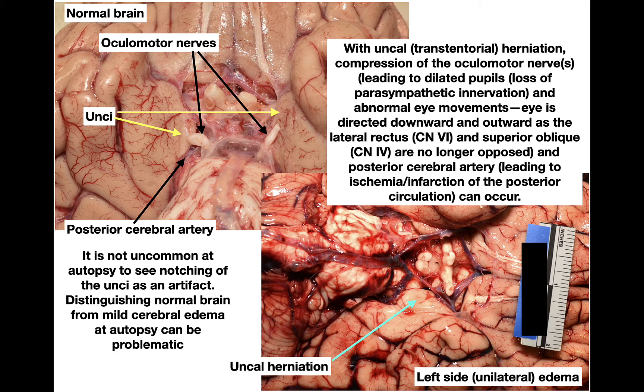In the bottom right image, the left uncus is herniated — compare it to the other side which is only slightly notched. When the uncus herniates, it can pinch the oculomotor nerve, damaging the parasympathetics and leading to a dilated pupil on one side. It also causes abnormal eye movements — the lateral rectus and superior oblique are unopposed, moving the eye downward and outward. Uncal herniation can also pinch the posterior cerebral artery, causing an infarct in its distribution.